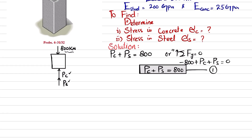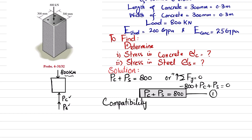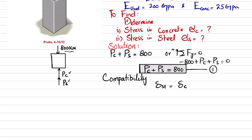Now we apply compatibility. The load causes compression in both the four steel rods and the concrete. Since they are bonded together, the change in length of the steel must equal the change in length of the concrete.